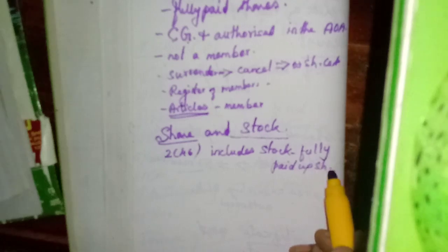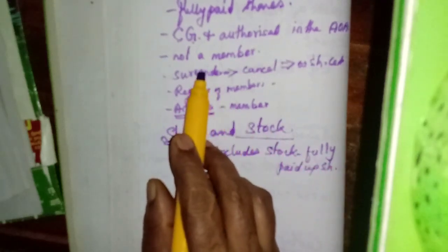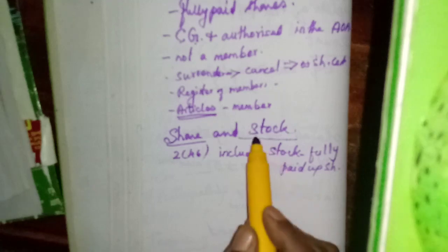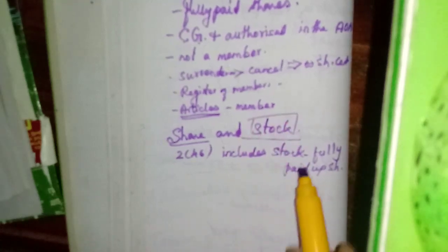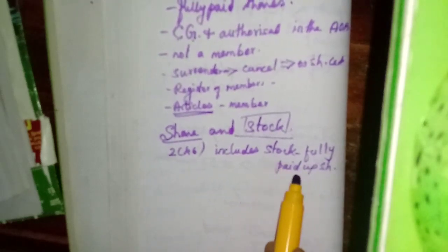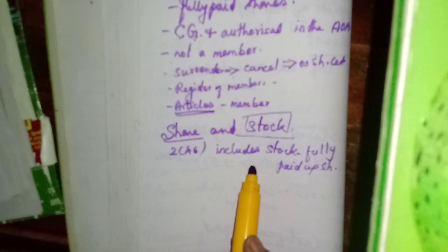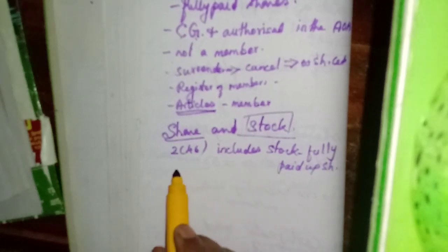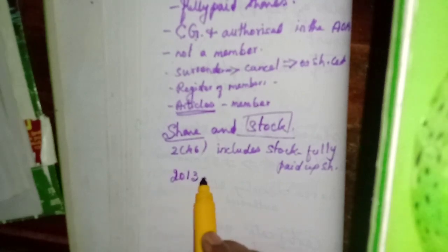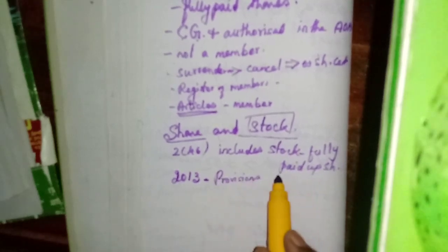In the stock exchange, only the fully paid-up shares can be exchanged. The share warrant is also a negotiable instrument, issued only by public companies, and only for fully paid shares — the same meaning as stock. Stock is the fully paid-up shares. Shares can be converted into stock, and stock can be converted into shares. The Companies Act 2013 has given provisions for this conversion.